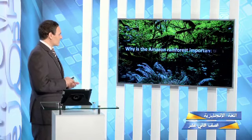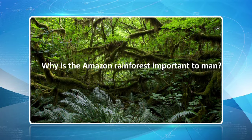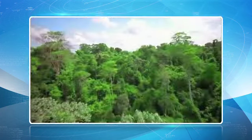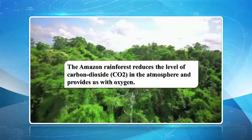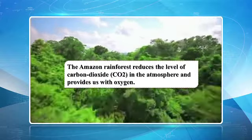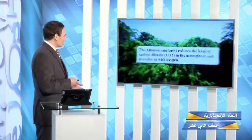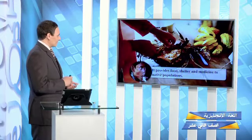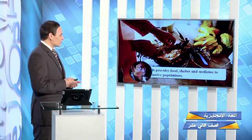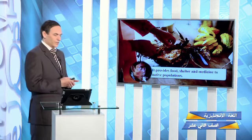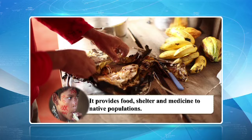Next question: why is the Amazon rainforest important to man? This answer applies to forests in general. The Amazon rainforest reduces the level of carbon dioxide (CO2) in the atmosphere and provides us with oxygen. Also, the rainforest provides food, shelter, and medicine to native populations and local inhabitants — it is the place where they get everything they need.